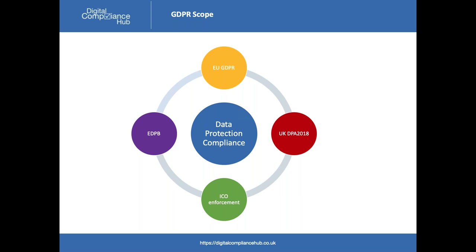GDPR is a European-wide regulation, but in the UK we also have the Data Protection Act 2018, which implements a number of pieces of legislation. Whilst GDPR is blanket coverage across Europe, there are small things determined by national laws — for example, exemptions to the subject access right, or the definition of the age of a child when seeking consent, which can be anywhere from 13 upwards. The Data Protection Act 2018 implements it as 13. It also covers law enforcement and the powers of the ICO.